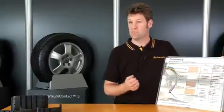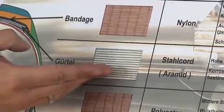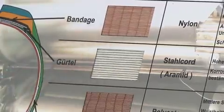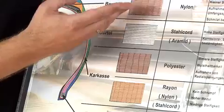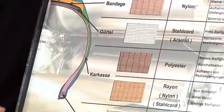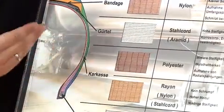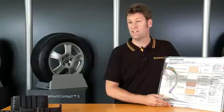We build a number of structural supports into each tire. The belts and beads, for example, are made from steel, while textiles such as nylon, polyester, and rayon are used in the carcass. If we didn't build these structural supports into the tires, they would lose their form and inflate like a balloon.